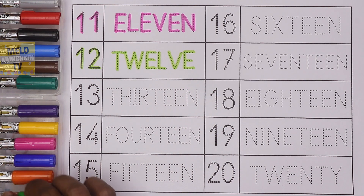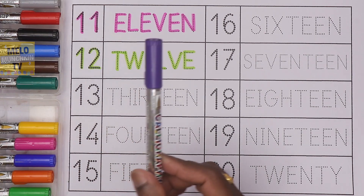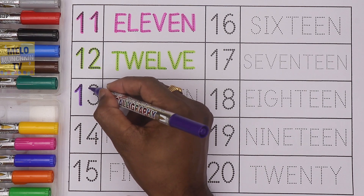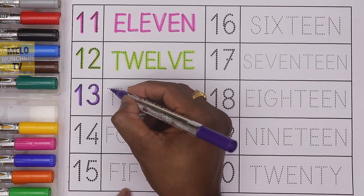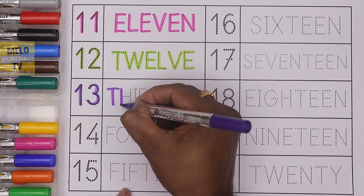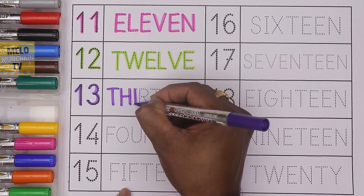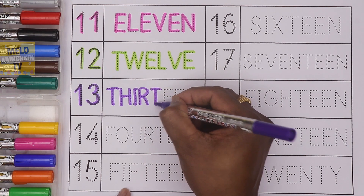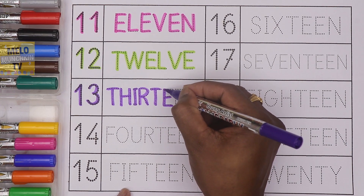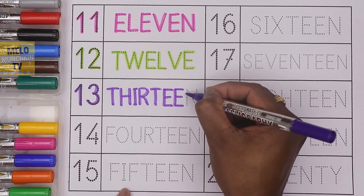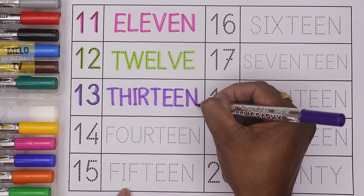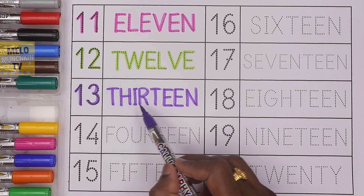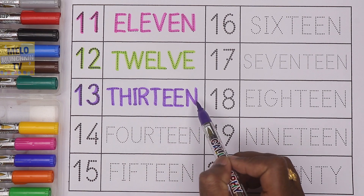Next I'll take purple color — this is purple color — to write the number 13. 1, 3, 13. And the spelling is T H I R T E E N. 13. This is number 13: 1, 3, T H I R T E E N, 13.